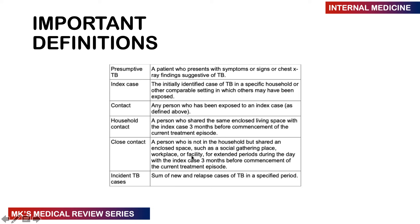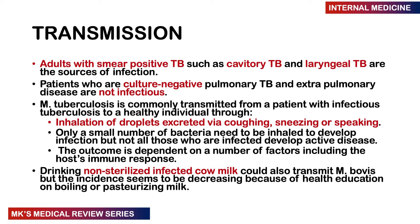A close contact is someone not in the household but who has shared an enclosed space — a social gathering, workplace, or facility — for an extended period during the day with the index case three months before treatment commenced. An incidental TB case is the sum of new and relapse cases in a specific period. TB is transmitted mainly through smear-positive individuals and those with cavitary or laryngeal TB.